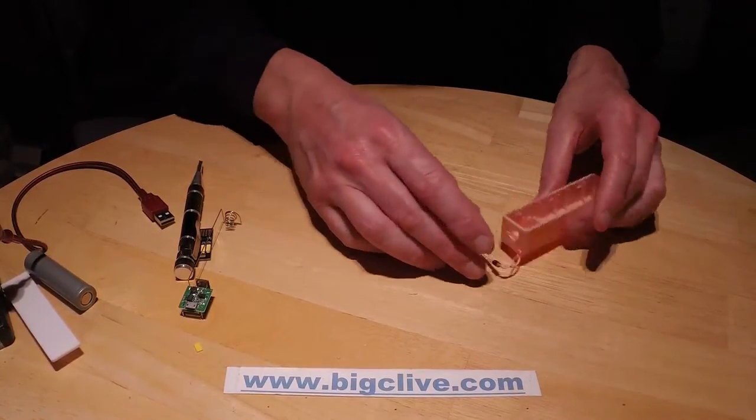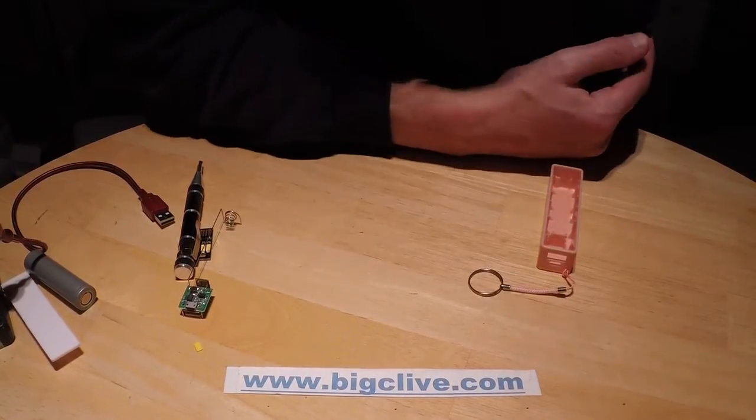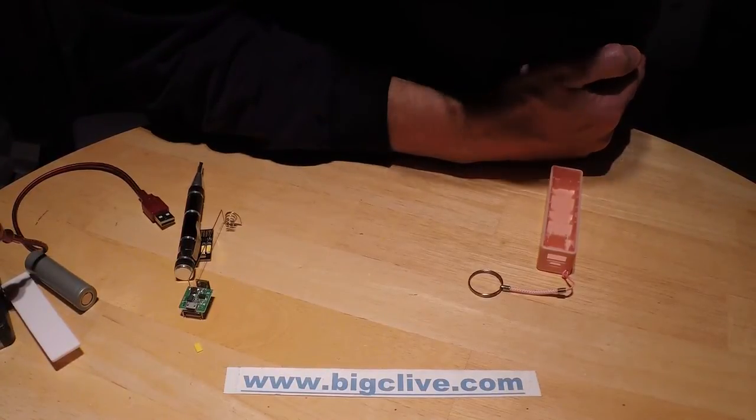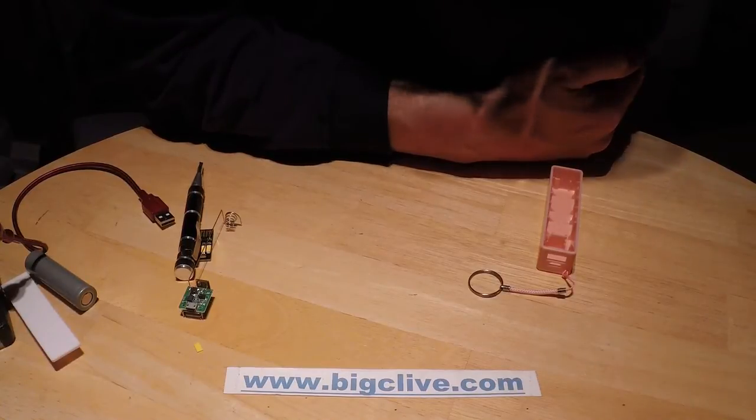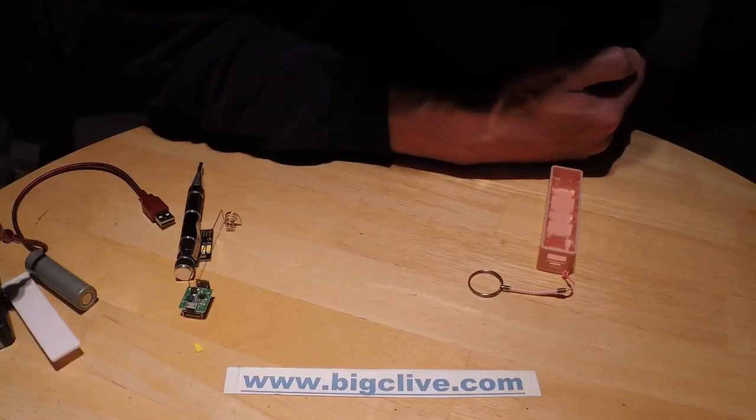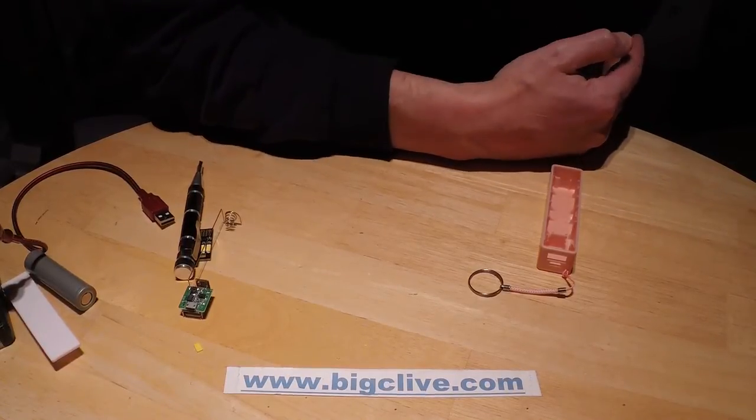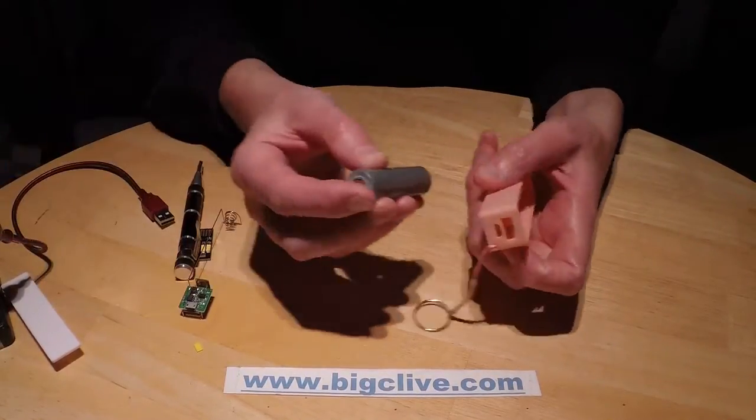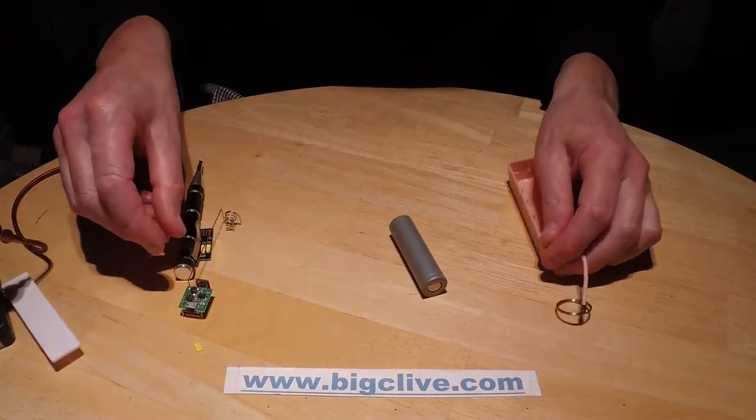Now I did put the meter across this and charge it up. And the charge current started at 600mA at a battery voltage of 4 volts and progressively from about 4.1 it started dropping. And at 4.2 volts it was 100mA, and at 4.21 it just shut off completely. And the voltage dropped back down to about 4.16. So it seems to be, certainly on the charging side, it seems to be doing the proper stuff.